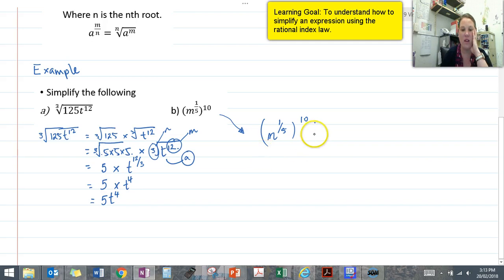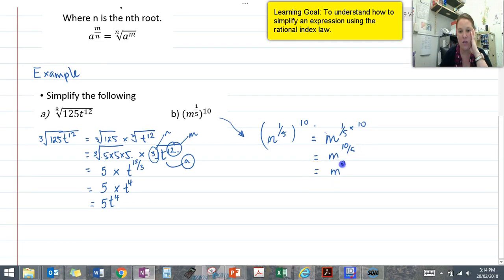That's going to equal m to the 1 over 5 times 10, which equals m 10 over 5, which will be equal to m to the power of 2. That will be our simplified answer. So that's how we can simplify using our rational or fractional index law.